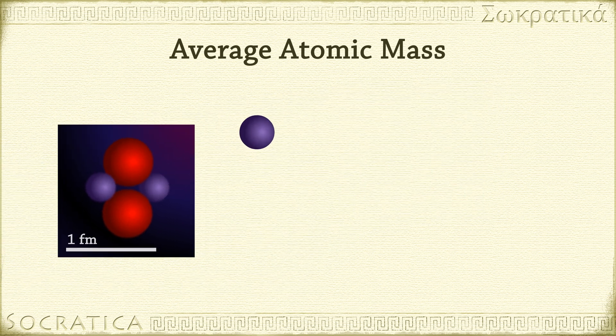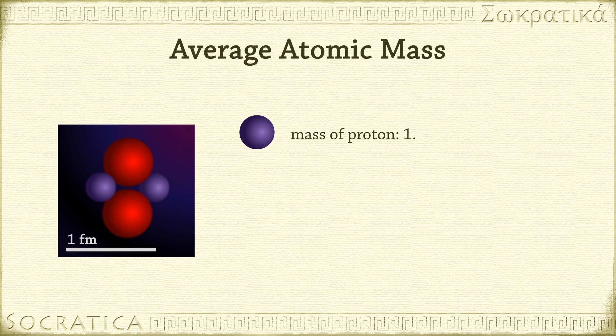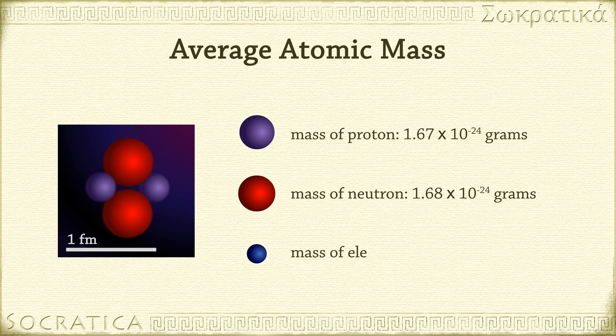For instance, the mass of a proton is 1.67 x 10^-24 grams, the mass of a neutron is 1.68 x 10^-24 grams, and the mass of an electron is 9.11 x 10^-28 grams. Adding and multiplying numbers of those very small sizes is awkward,